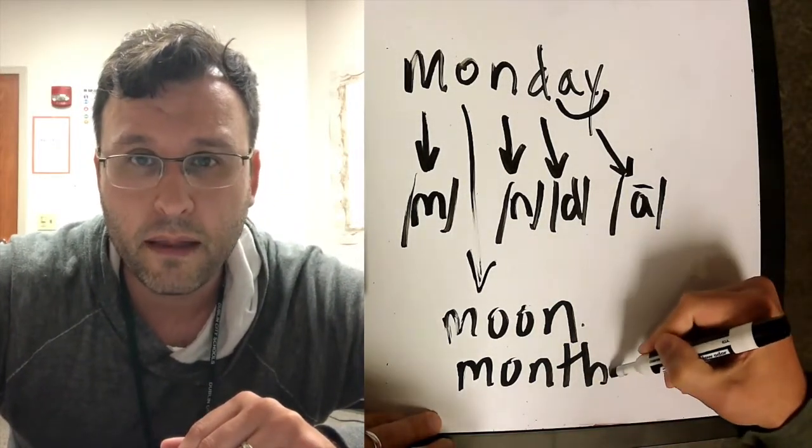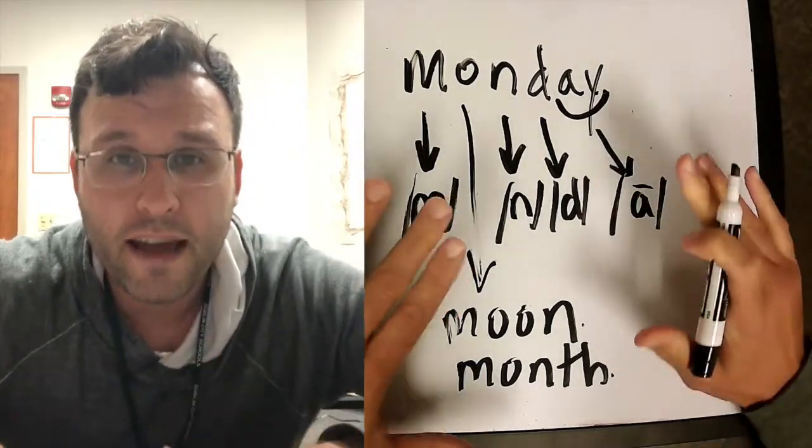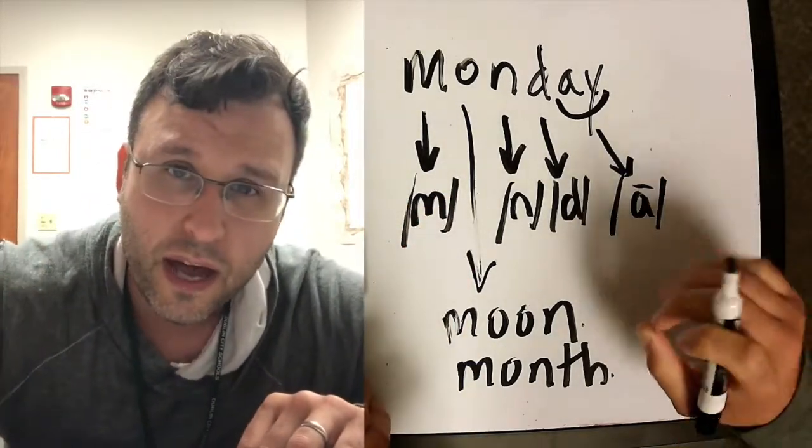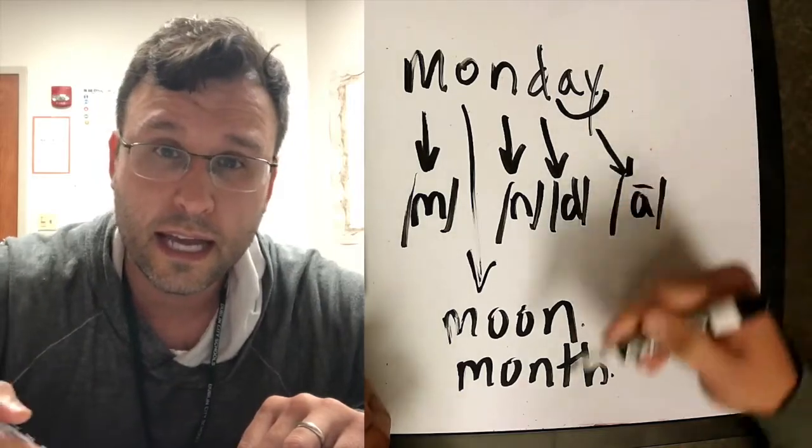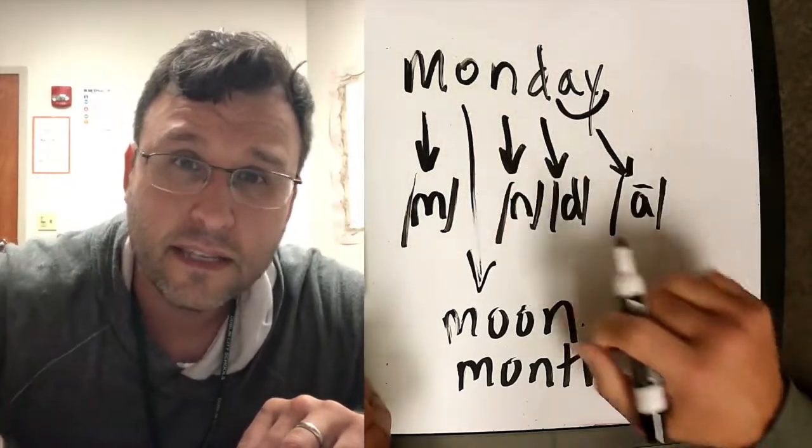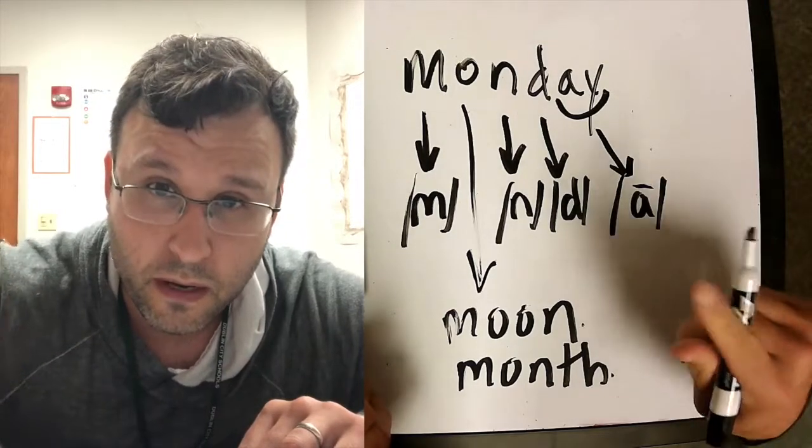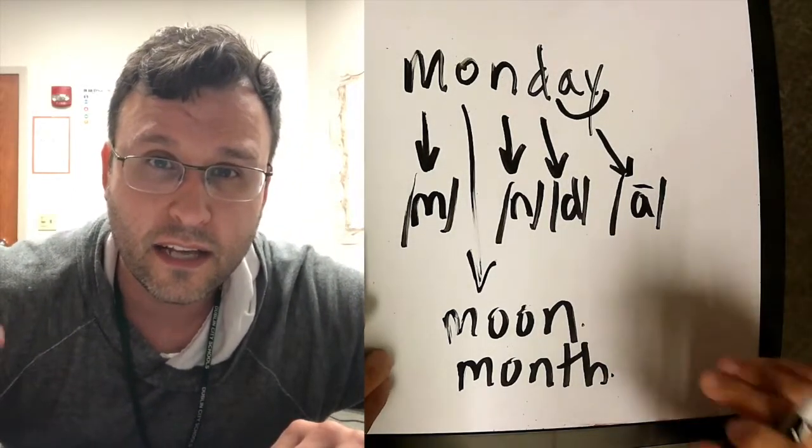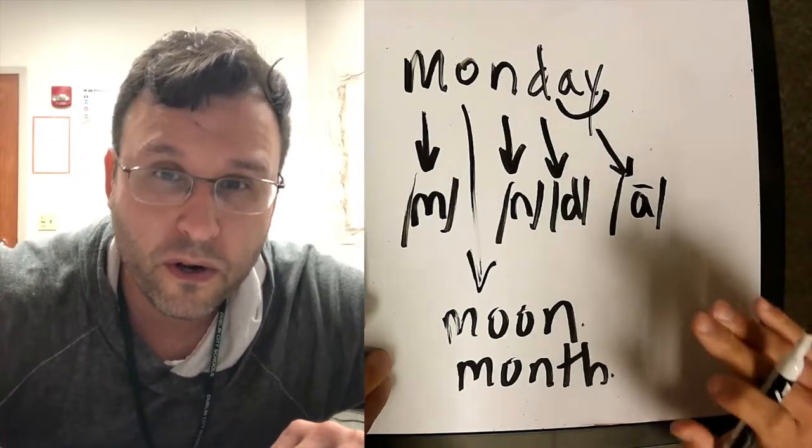One month is how long it takes for the moon to go all the way around the Earth. So moon, month, and Monday all have that O because that O helps the word Monday look like others in the moon word family. That O is out there to make you remember the moon. That's all the time I have today. I'll see you next week on One Minute Words with Mr. Myers.